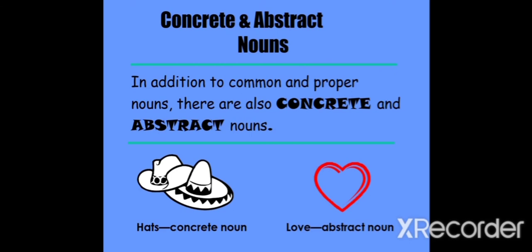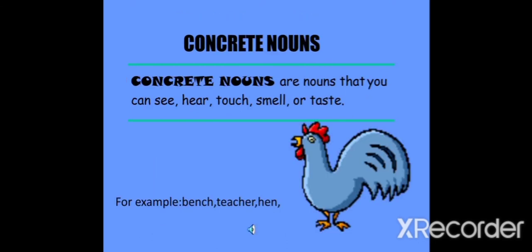In addition to common and proper nouns, there are also concrete and abstract nouns. Concrete nouns are nouns that you can see, hear, touch, smell or taste. These nouns that can be seen physically are known as concrete nouns.